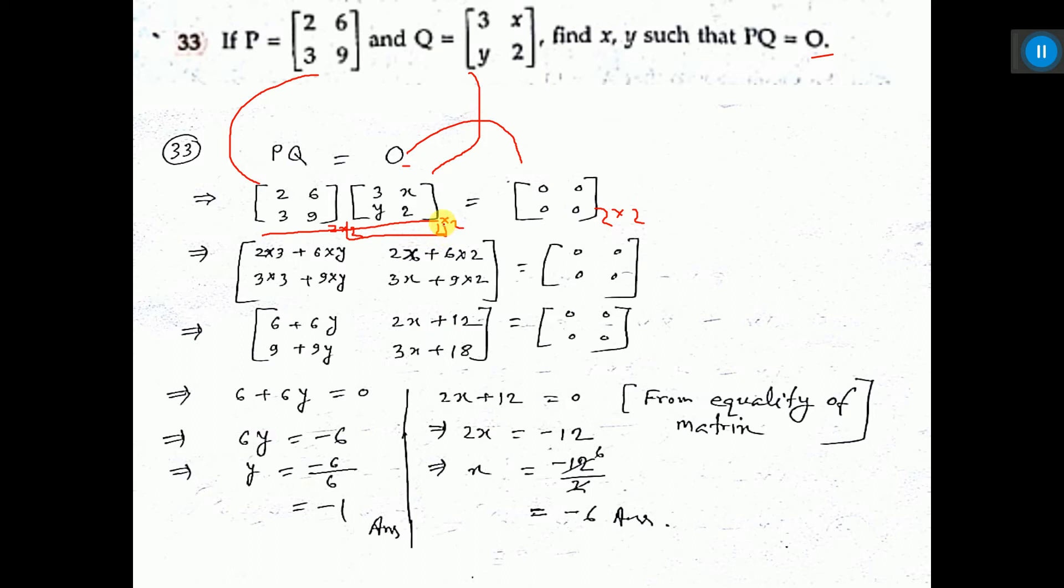You see, the inner orders 2 and 2 are equal, so matrix multiplication is possible. Now let us do the multiplication. You know matrix multiplication means row by column multiplication. First row, first column.